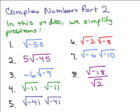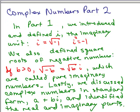In this video we simplify the following eight problems. This is part two of complex numbers. In part one we introduced and defined i. We defined the square roots of negative numbers, which were called pure imaginary numbers, and we discussed complex numbers in standard form, identifying their real and imaginary parts.